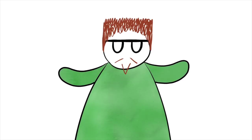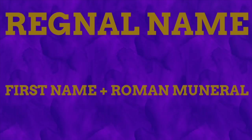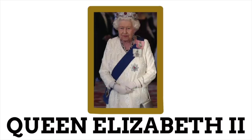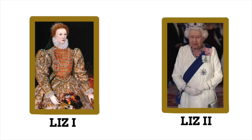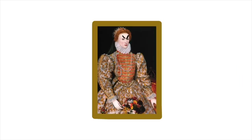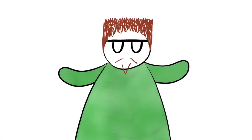When someone becomes king or queen, they take on something known as a regnal name — just a first name with a number following it. This number represents how many royals have had that name already. The current queen's regnal name is Queen Elizabeth II, as she is the second queen to have that name. When she became Queen Elizabeth II, the initial Queen Elizabeth retroactively became Queen Elizabeth I — she wasn't known as this in her lifetime, as it would have felt presumptuous.